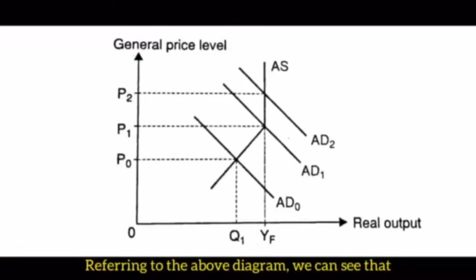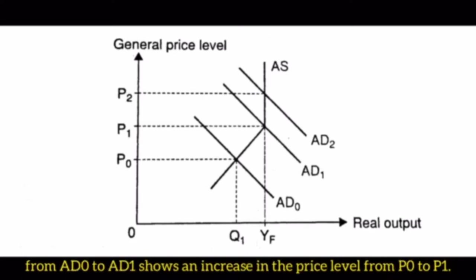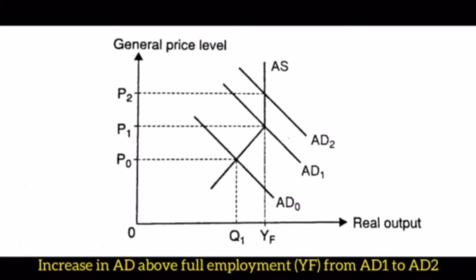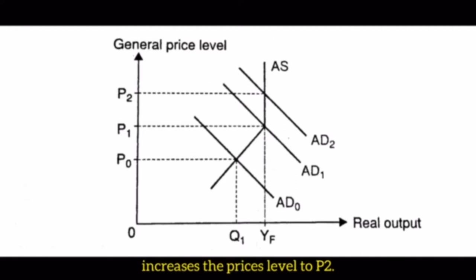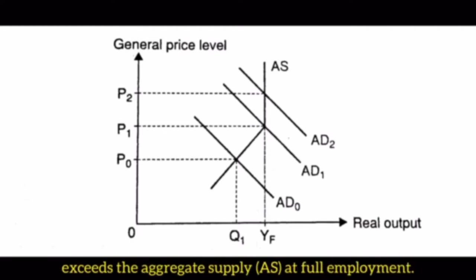Referring to the diagram, an increase in aggregate demand towards full employment YF from AD0 to AD1 shows an increase in the price level from P0 to P1. A further increase in AD above full employment from AD1 to AD2 increases the price level to P2. Here, real output has reached the maximum limit but prices are still increasing, illustrating that aggregate demand exceeds aggregate supply at full employment.